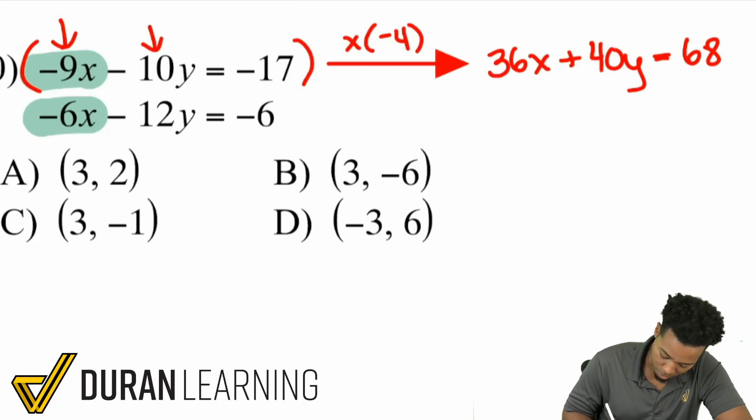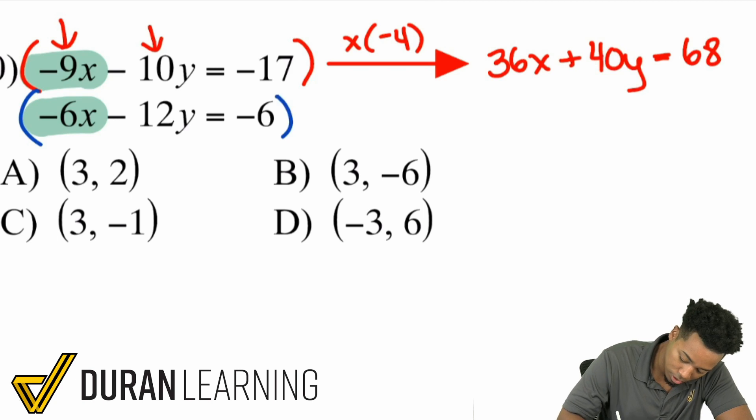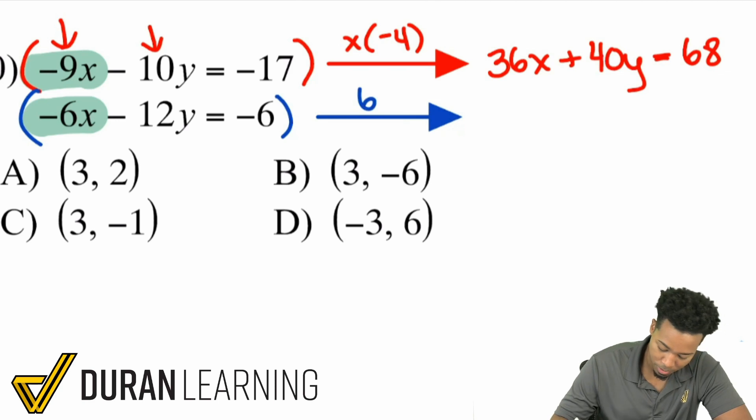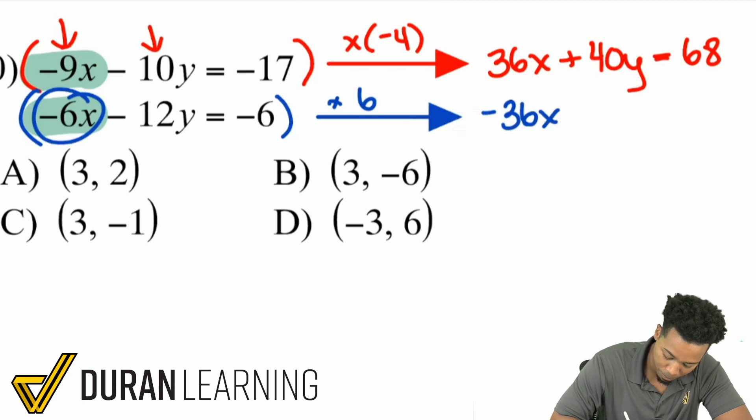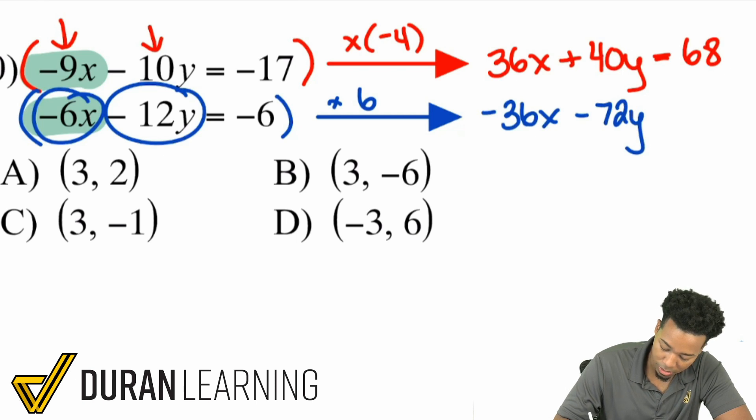Then from here, my math party people, we're going to take this equation and we're going to multiply it by 6. So here we go. Times 6. Negative 6x times 6 is negative 36x. Negative 12y times 6 is negative 72y. Negative 6 times 6 is negative 36.